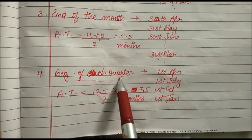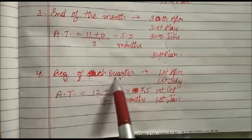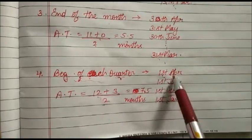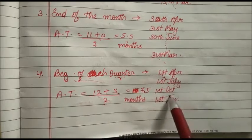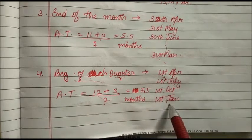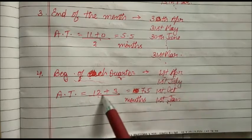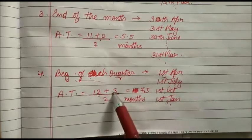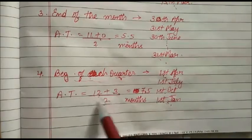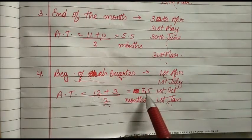Now for quarterly drawings: a quarter contains 3 months and there are 4 quarters in a year. If the partner makes drawings at the beginning of each quarter — 1st April, 1st July, 1st October, 1st January — months left after the first drawing on 1st April = 12 months; months left after the last drawing on 1st January = 3 months. Average time = (12 + 3) ÷ 2 = 7.5 months.